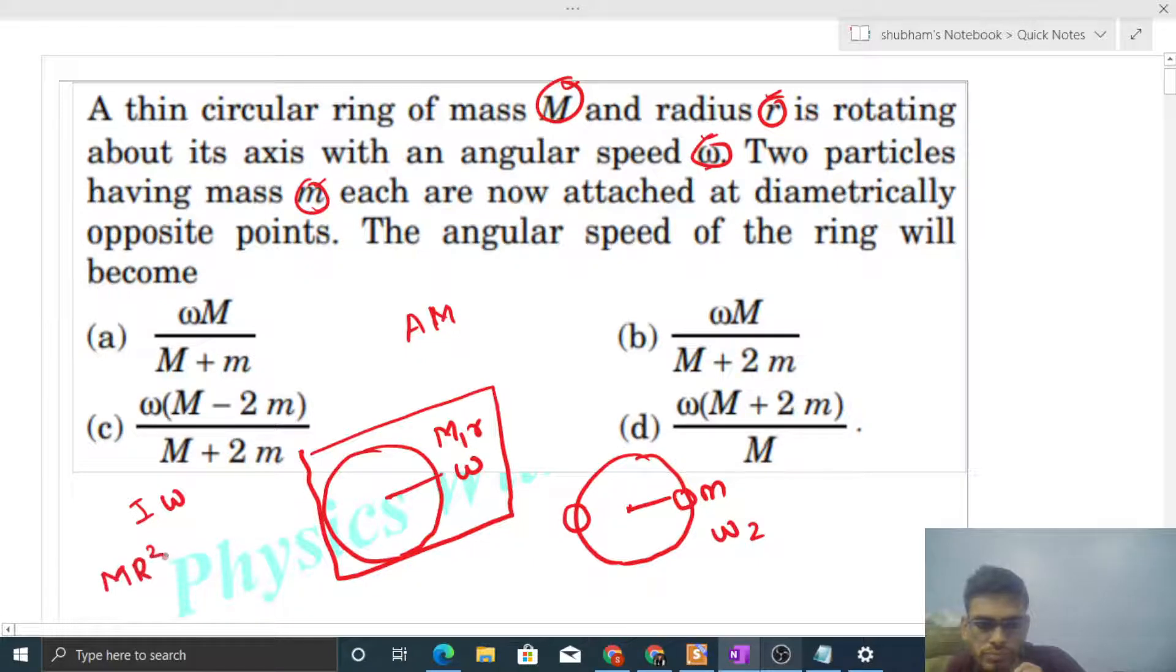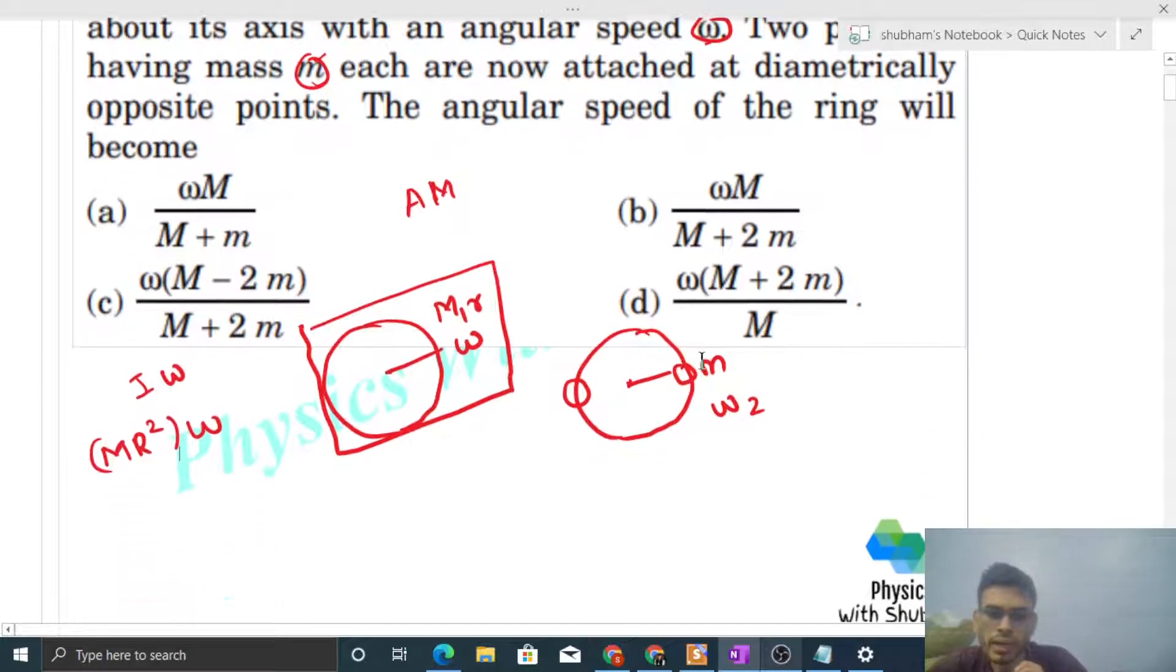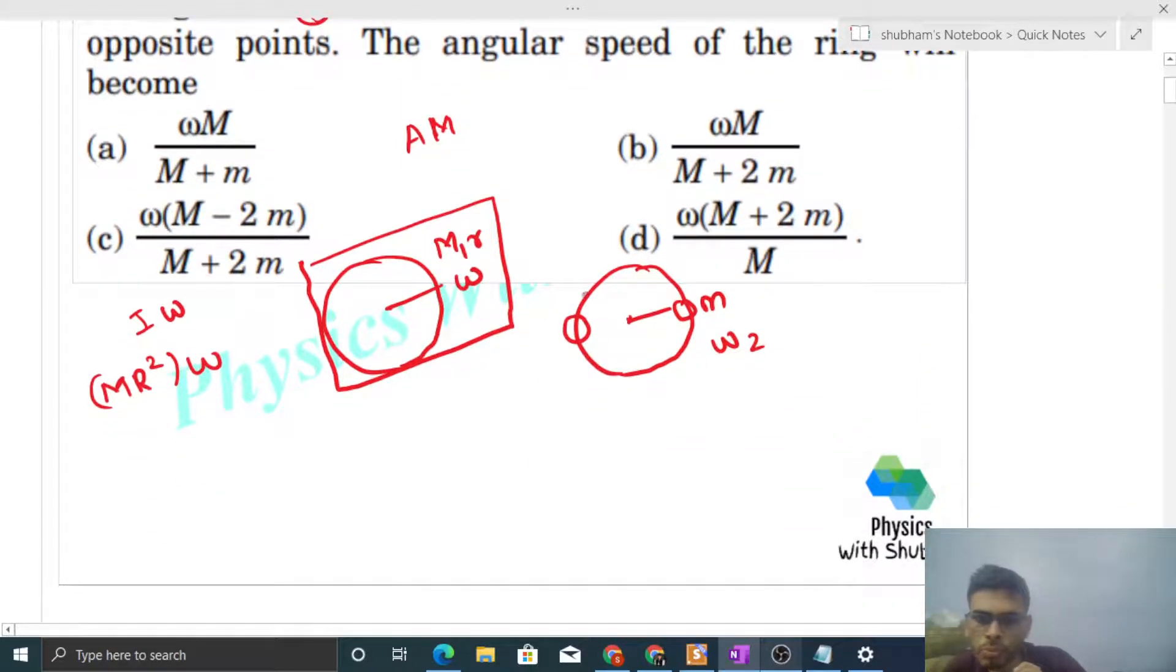Now in the final condition, there are two particles added. So the ring's moment of inertia about its axis is M r squared, plus these two particles' moment of inertia. That is simply m into r squared, the distance from the axis of rotation is r. Plus the second particle, same thing, small m into r squared.